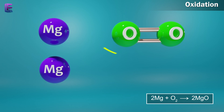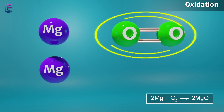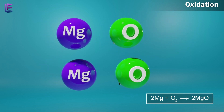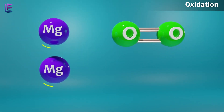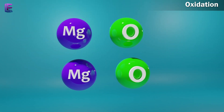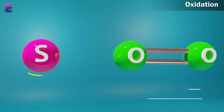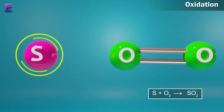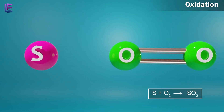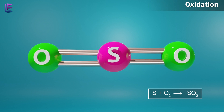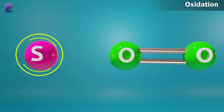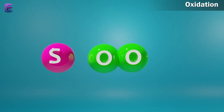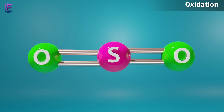2Mg + O2 gives rise to 2MgO. In this reaction, magnesium combines with oxygen and gets oxidized. S + O2 gives rise to SO2. In this reaction, sulfur combines with oxygen and gets oxidized.